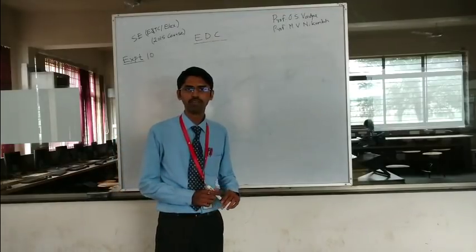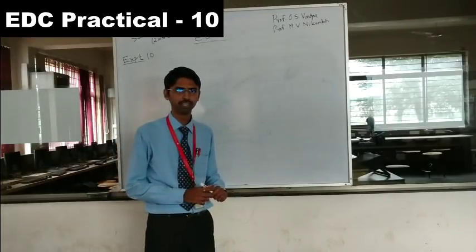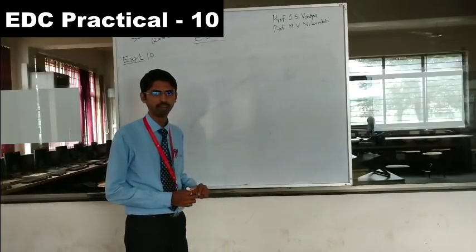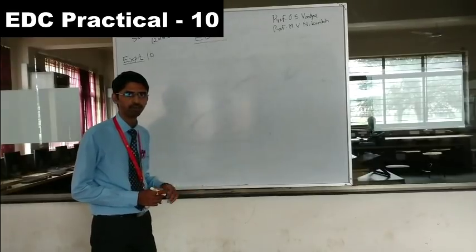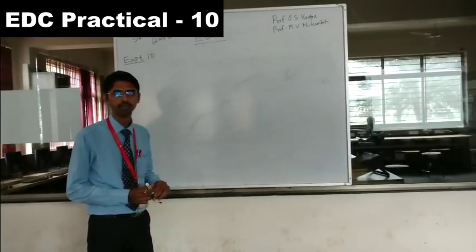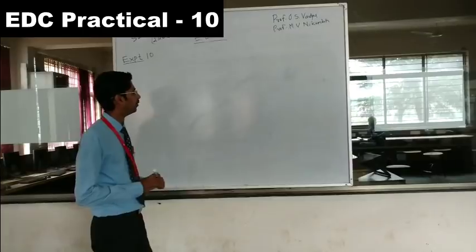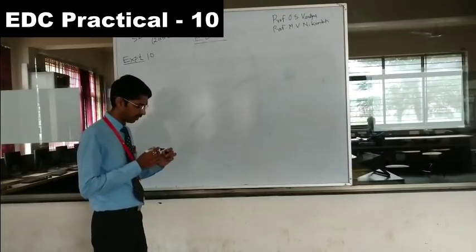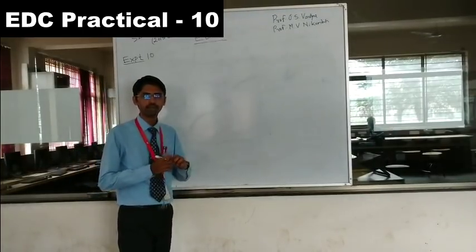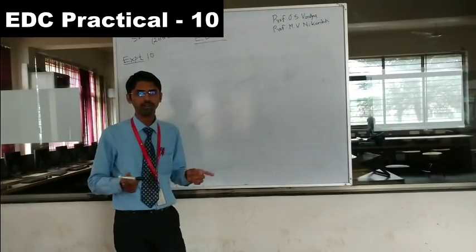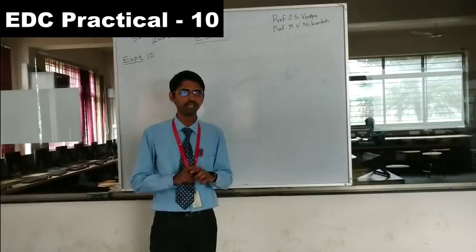Welcome to this session of electronic devices and circuits. We will discuss experiment number 10, which is the design and implementation of a voltage regulator using a three-terminal IC. Before that, we will look at the block diagram of a voltage regulator.